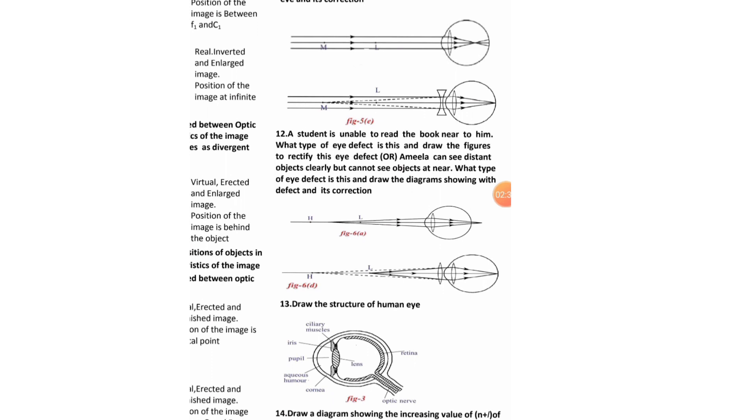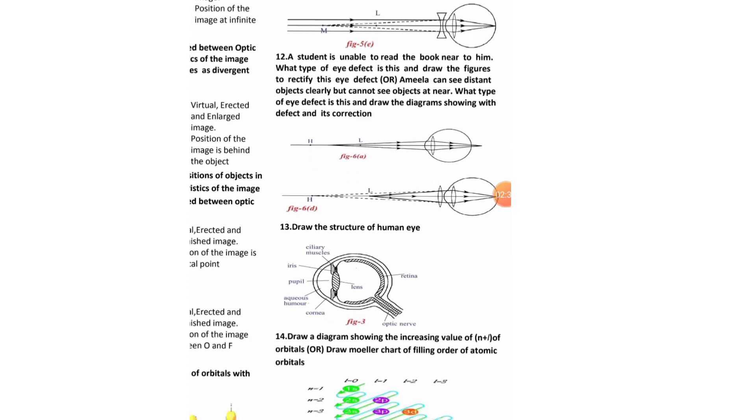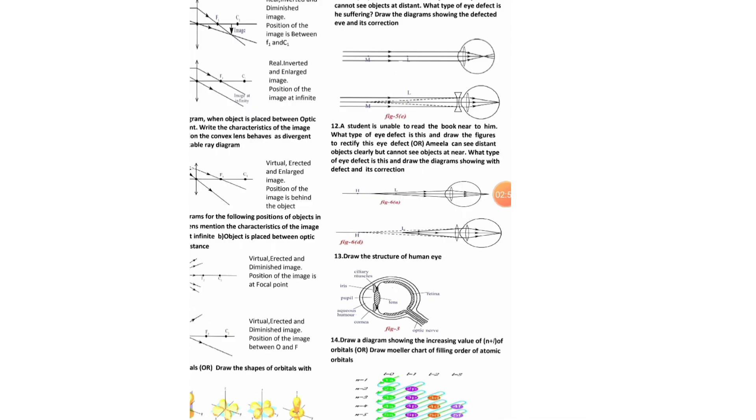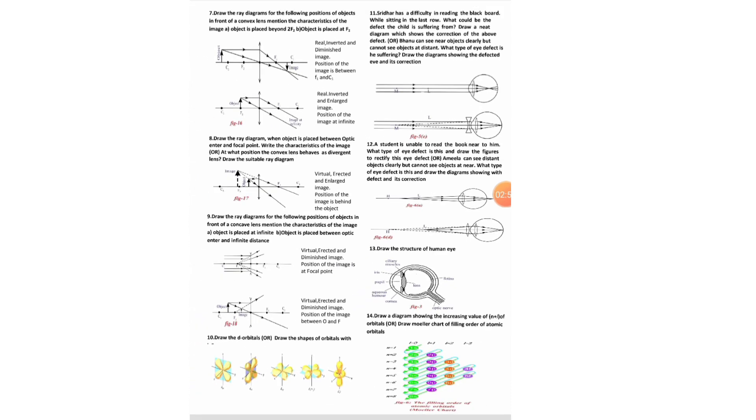Now, student is unable to read the book near to him. What is the diagram here? Draw the structure of human eye. Here, draw the diagram showing increasing value of n plus 1 of orbitals. Draw the molar chart of filling order of atomic orbitals. These are the diagrams we are having, question number 7 to 14.